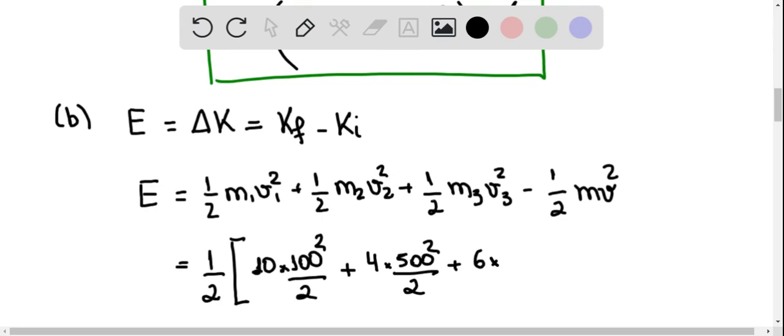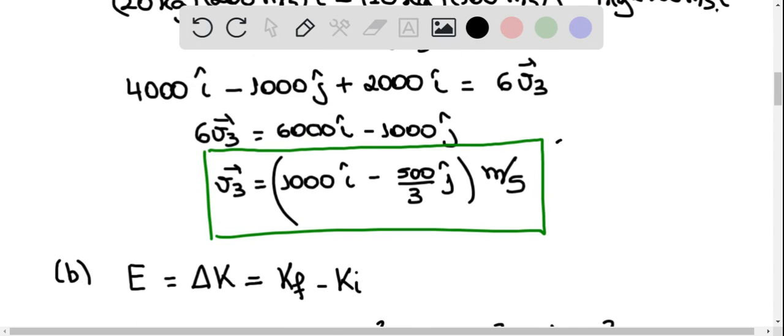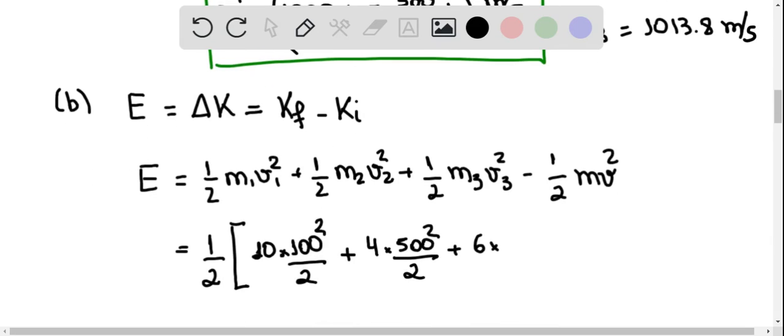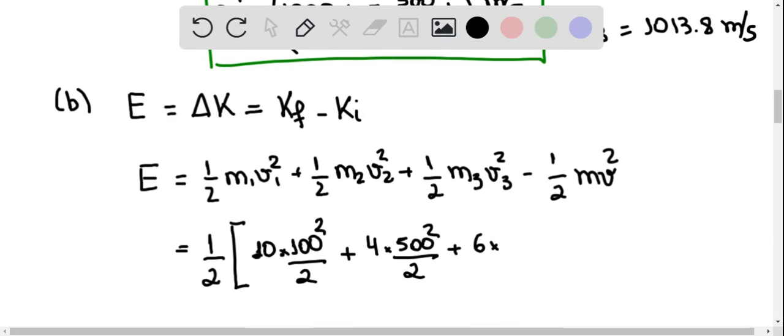M3 is 6. The speed is... We have to go back here and calculate the speed v3 as the square root of 1,000 squared plus 500 divided by 3 squared. This is the magnitude of the velocity. So v3 is 1,013.8 meters per second. So 6 times 1,013.8 squared divided by 2.